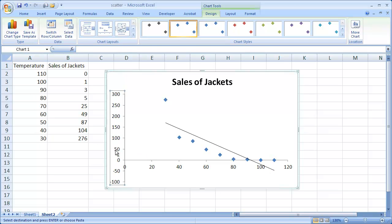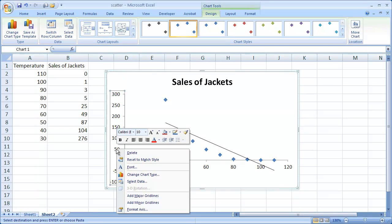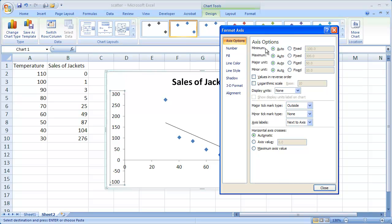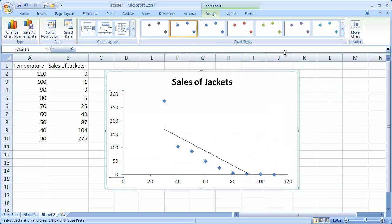So what we can do is we can click that and right-click it and go to Format Axis, and at the minimum, select Fixed and just make that zero. So basically, we're not going under zero sale of jackets.